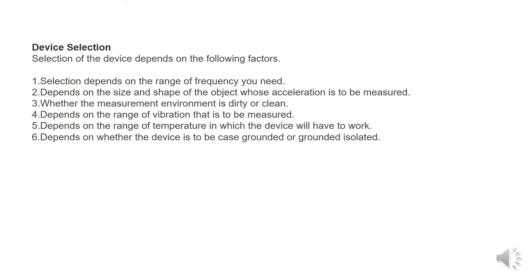If we are going to select, the following factors we have to consider during selection procedure of an accelerometer. Selection depends on the range of the frequency we need, depends on the size and shape of the object whose acceleration is to be measured, whether the measurement environment is dirty or clean, and depends on the range of the vibration that is to be measured.